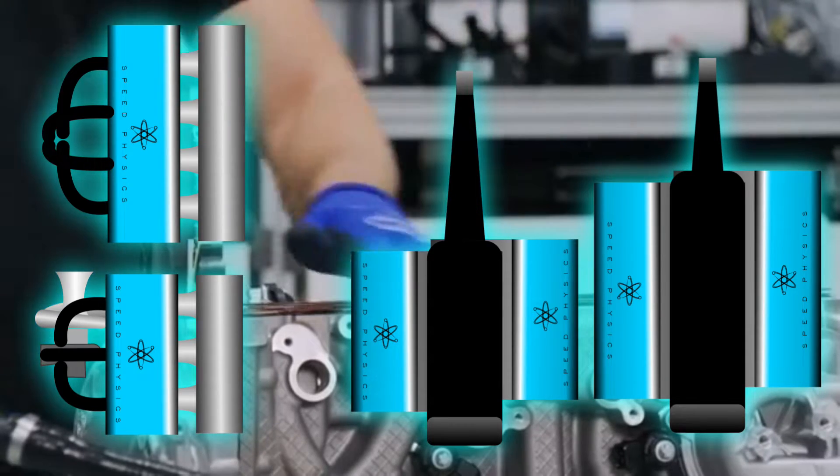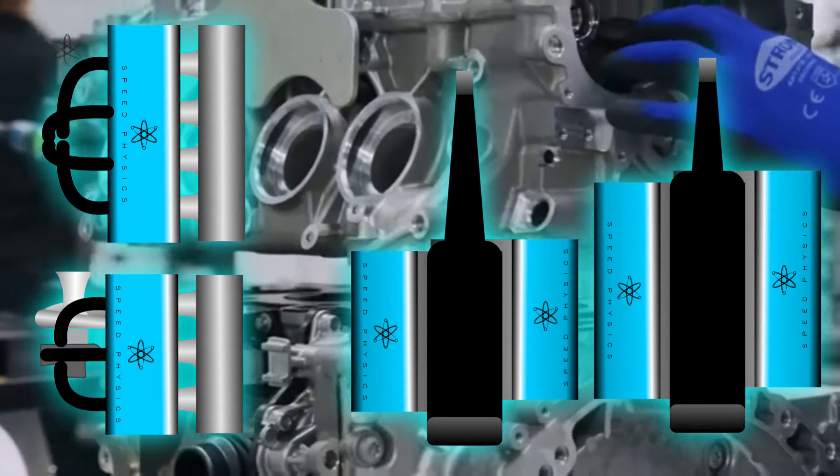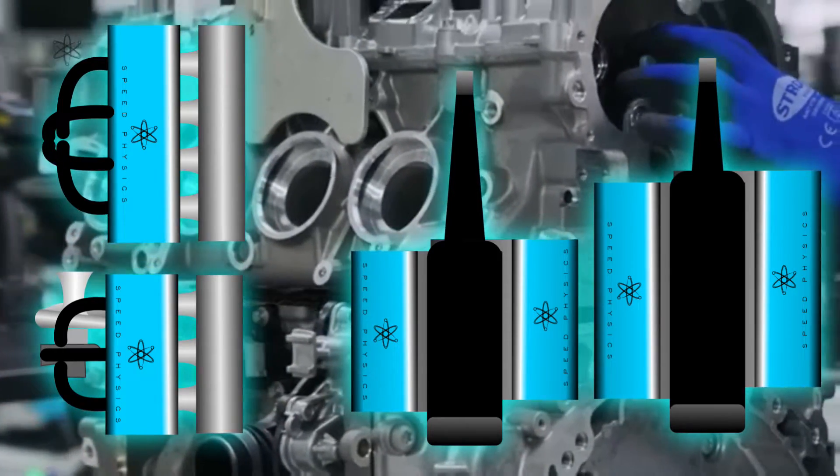For example, a 500cc cylinder times two for a 1.0L engine, three cylinders for 1.5L, four cylinders for 2L and a six cylinder variant for 3L and eight cylinders for 4L.